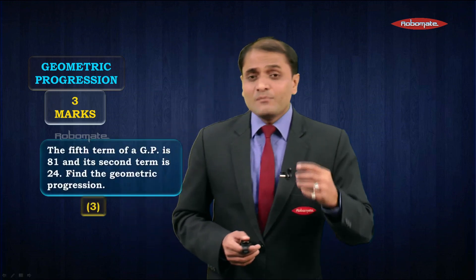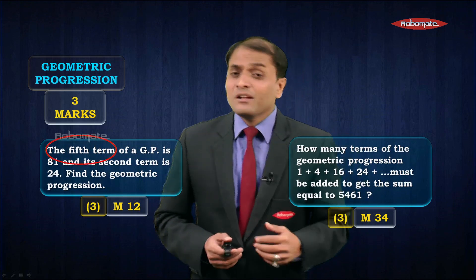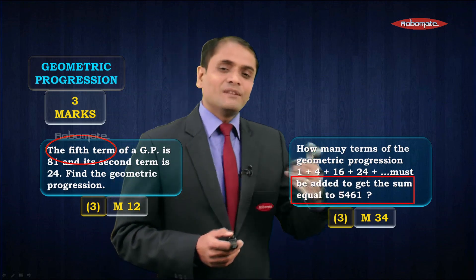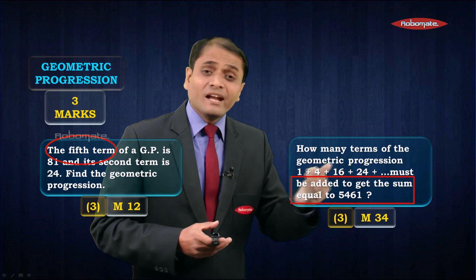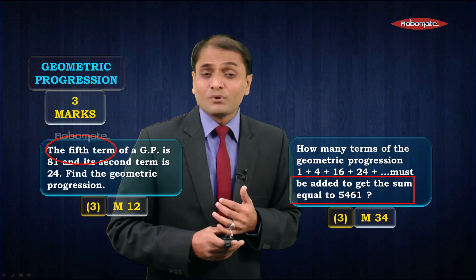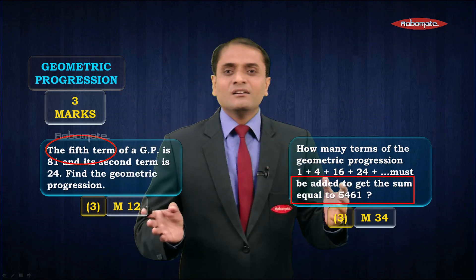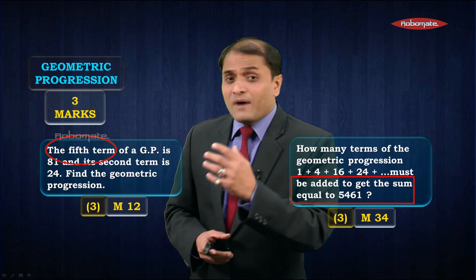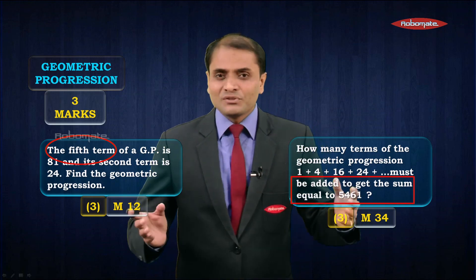For geometric progression, one question can be based on the tn formula — for example, 'find the fifth term.' Another sample question asks how many terms should be added to get a desired sum such as 5461, which is based on the sn formula. So these are the various types of questions that can come from the section of algebra, weighing 33 marks — a very important section.